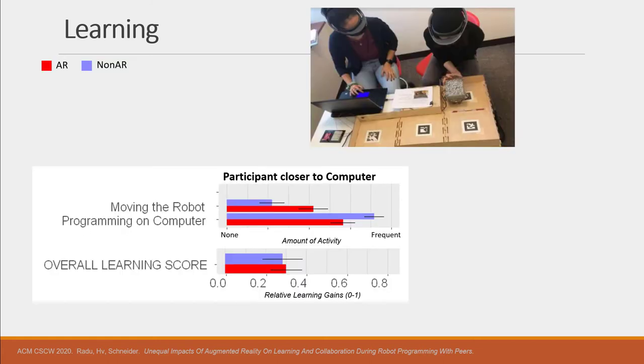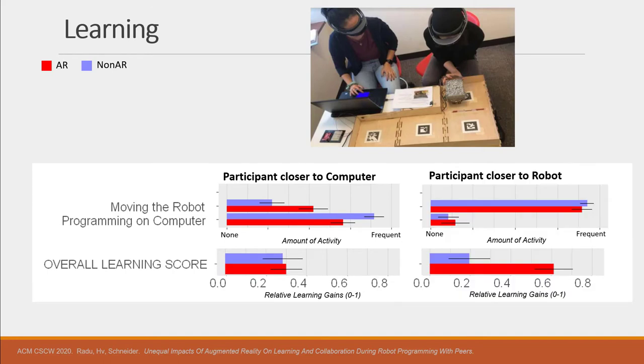However there was an interaction effect and we found that participants closer to the computer moved the robot more and programmed less with augmented reality but their learning remained roughly the same between the two conditions. In contrast for the participants closer to the robot, augmented reality did not significantly affect their engagement with the robot or computer but they learned much better when they had augmented reality.